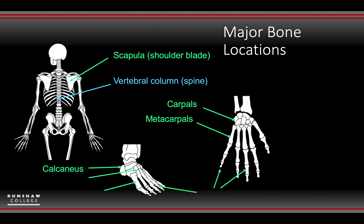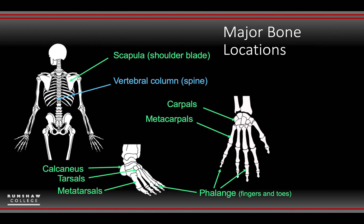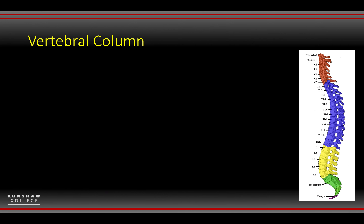With the feet, you've got your calcaneus — your heel bone — then your tarsals, which form the lower part of the ankle, and your metatarsals, which make up the main bridge of the foot. And your phalanges are simply your fingers and toes — just small bones, classified as long bones, but they are small bones.